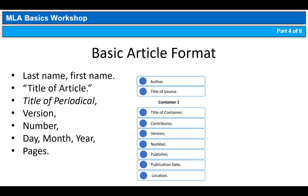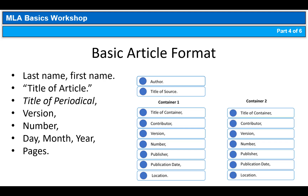Since the articles you find in the library databases are housed within a database, you'll also need to include some information from container 2. In this case, the title of the container will be the title of the database. Notice that the database title is in italics followed by a comma. The final element from container 2 is the location — either the DOI, or digital object identifier, or the URL, followed by a period. Most recent articles will use a DOI. For older articles published before DOIs, you will need to use the URL or permalink for the article.